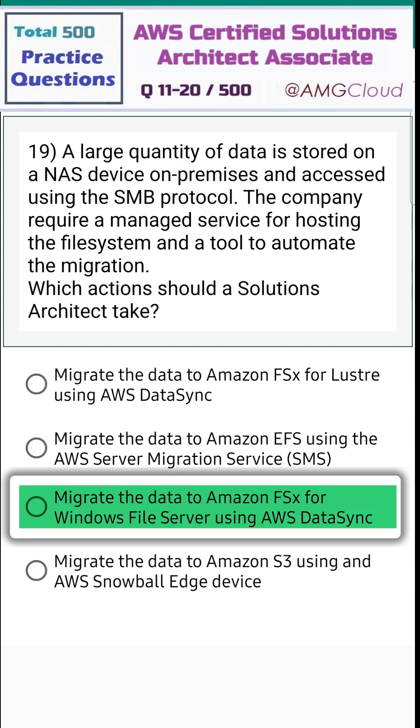The correct answer is option three — migrate the data to Amazon FSx for Windows File Server using AWS DataSync.